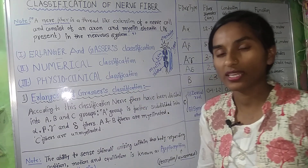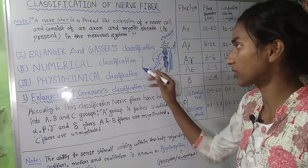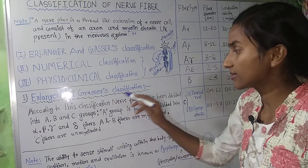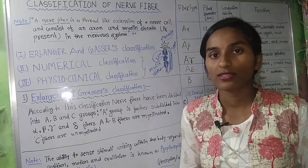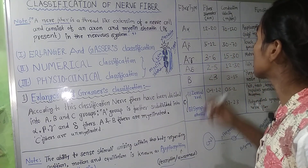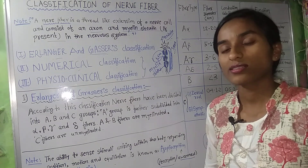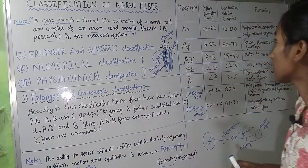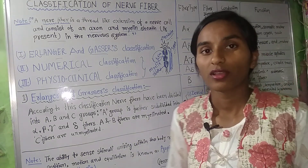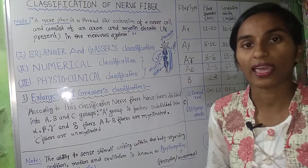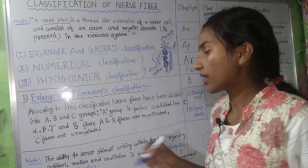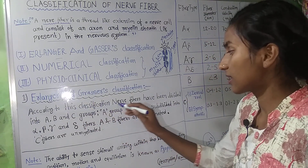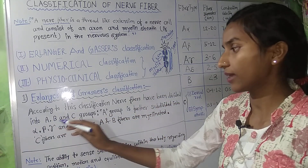Erlanger and Gasser classification will be discussed in detail. These two scientists conducted an experiment on nerve fiber and discovered that as the fiber diameter increases, the conduction velocity increases and the impulse transmission increases. On this basis, they classified nerve fibers into three groups: A, B, and C.